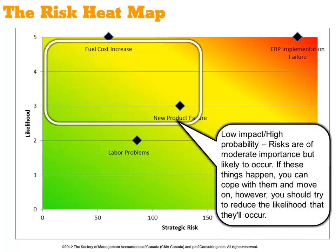In the top left corner, that's where the risks have a low impact but a high probability. These risks are of moderate importance, but they're likely to occur. If these things happen, you can cope with them with your usual management processes. However, you should try to reduce the likelihood that they occur, because dealing with them still consumes capacity.